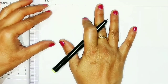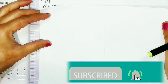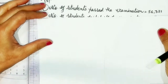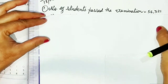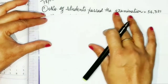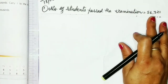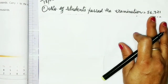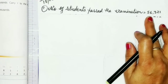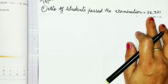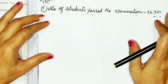Let us solve question number 1. The first statement of question number 1 will be: the number of students who passed the examination is equal to 56,321.